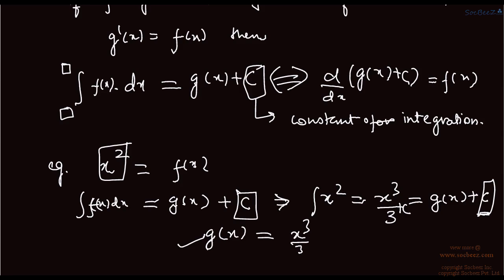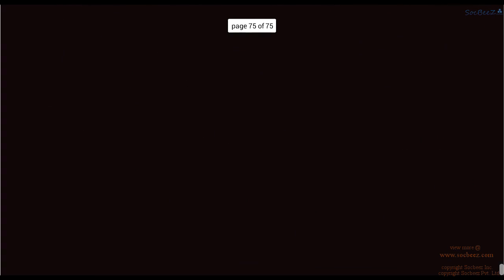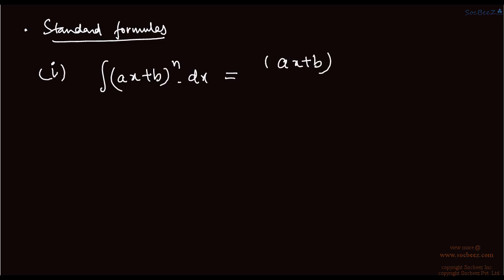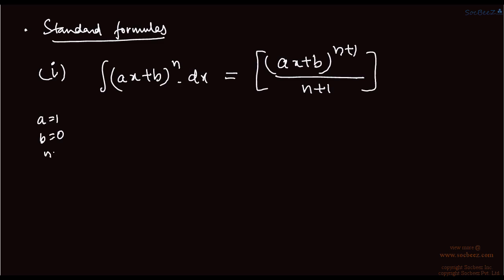Now we will cover some standard formulas. The first one is the integral of (ax + b) to the power n, where n is a constant or natural number not equal to negative 1. This equals (ax + b) to the power n+1 upon (n+1), just like we did with x squared where a was 1, b was 0, and n was 2.